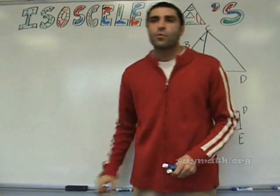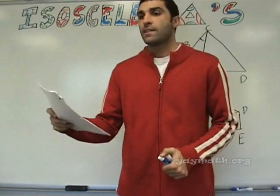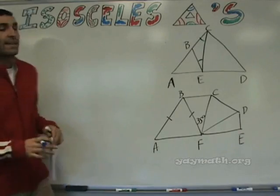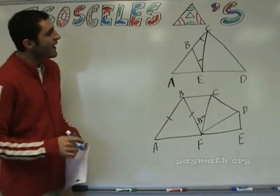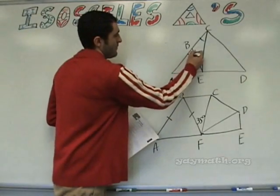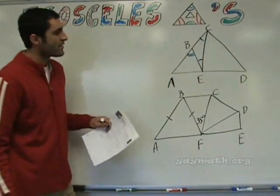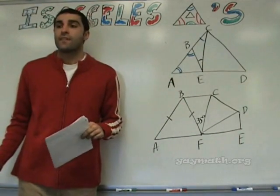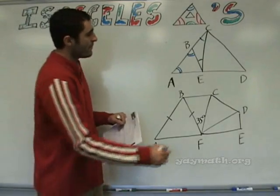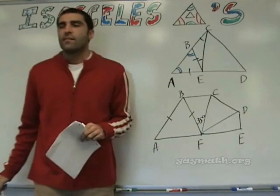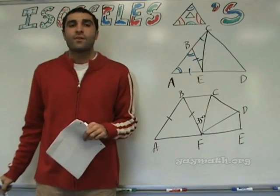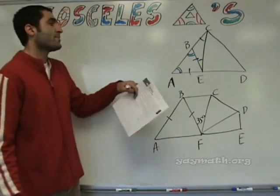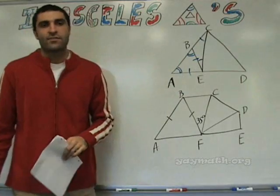Volunteer to read number two. If angle EBA is congruent to EAB, name two congruent segments. Okay. Now let's do it in the picture itself. If angle EBA is congruent to EAB, name two congruent segments. Segment BE and segment AB. Yes and yes.